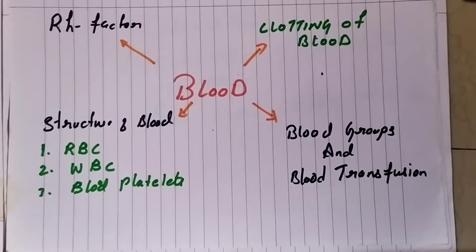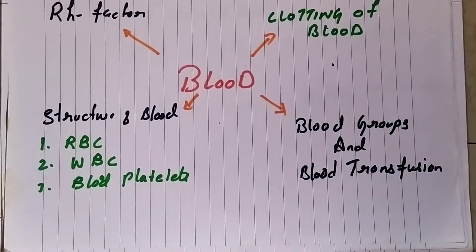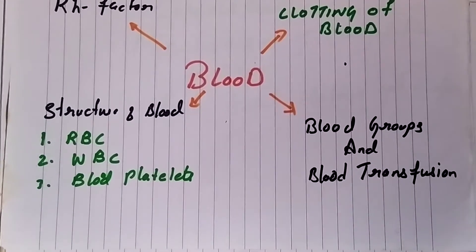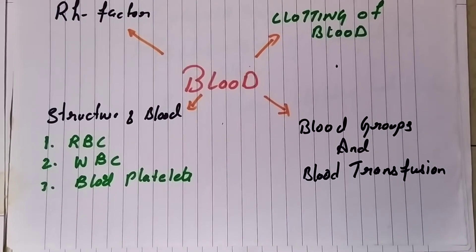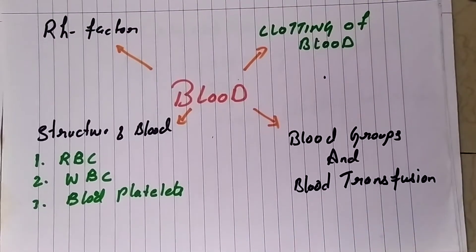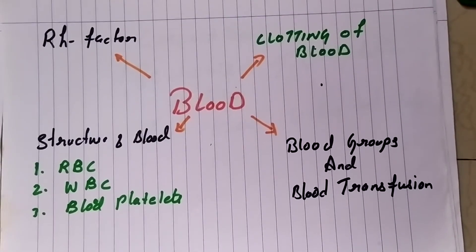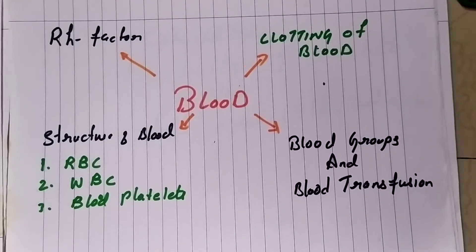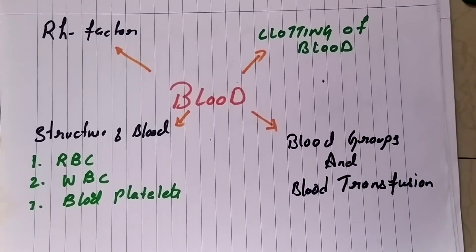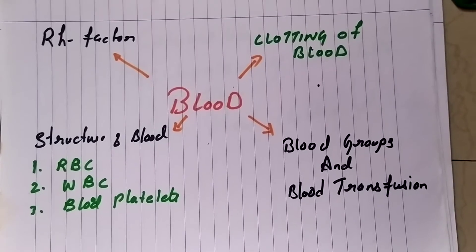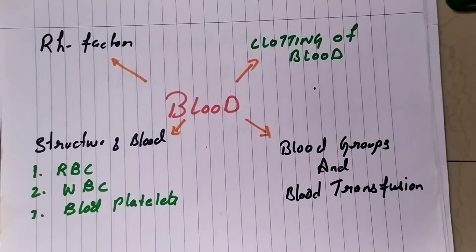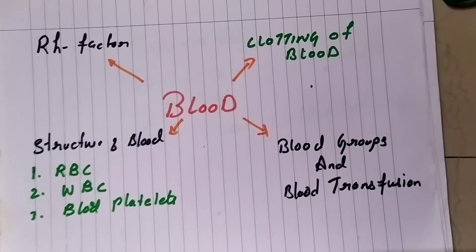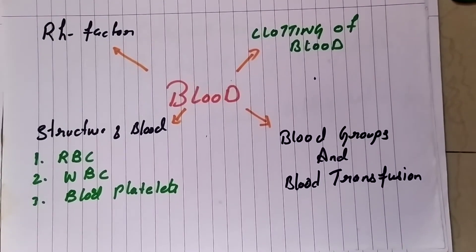Distribution of hormones: endocrine glands such as the thyroid gland, pancreas, and pituitary gland secrete hormones directly into the blood, which transports them to target organs, aiding chemical coordination. Defense against diseases: blood produces antibodies that combat bacteria and neutralize their toxins. White blood corpuscles engulf disease-causing bacteria and protect our body.